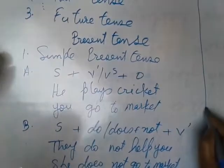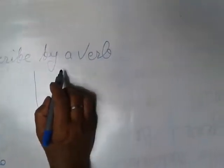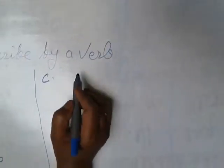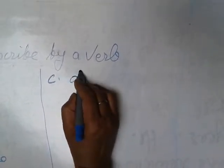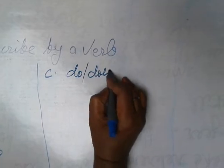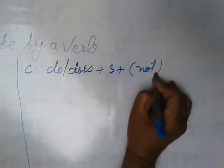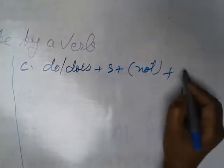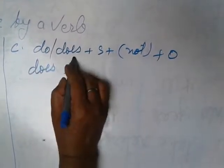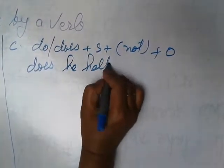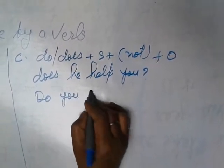The next part of simple present tense - C number. Simple present tense structure is subject, interrogative sentence. It starts with do/does plus subject. Not is not compulsory, so it is given in bracket, and object. Does he help you? Do you go to market?